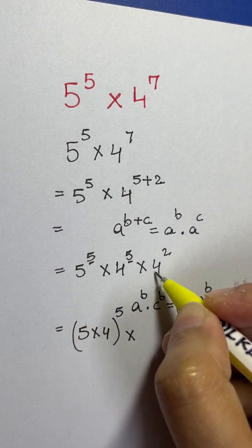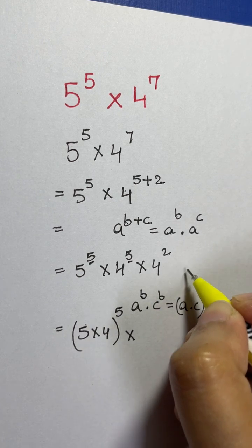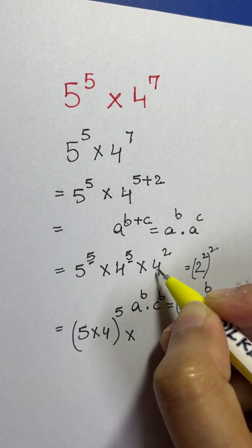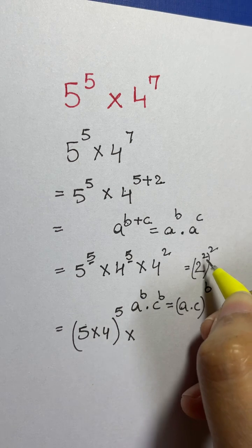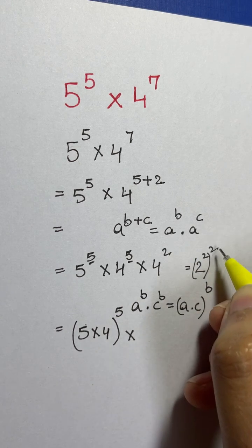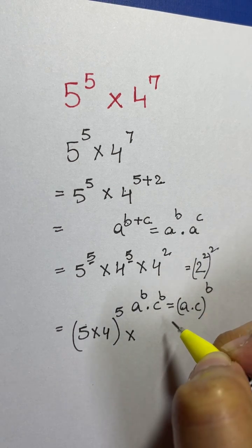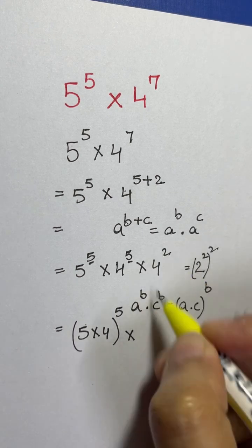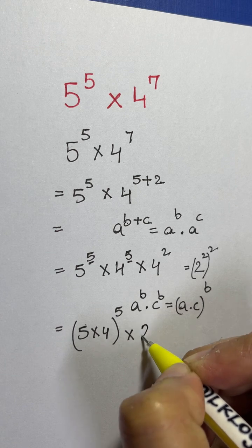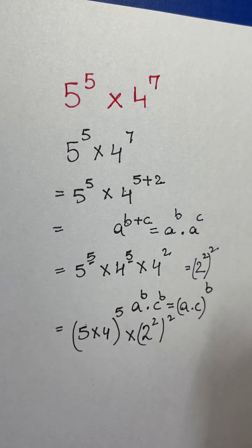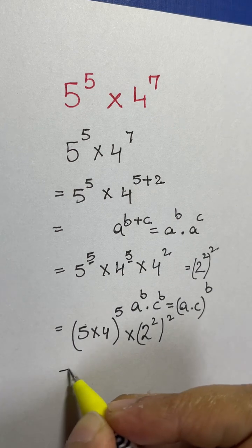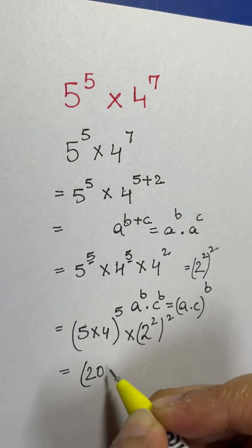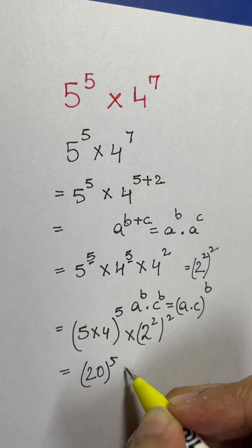Now 4 squared can be written as (2 squared) whole squared — since 2² equals 4, and we square it again. So we have 20 to the power of 5 times (2²)².